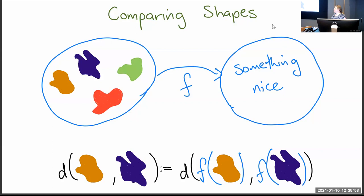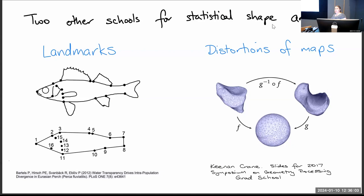The question then is: what measurements should we make? These measurements don't have to be numbers; they can be complicated objects. One classic approach is landmarks — you can imagine Charles Darwin marking locations of biological interest on specimens. For a fish, you might mark 16 points, and then you compare shapes just by comparing those 16 points.